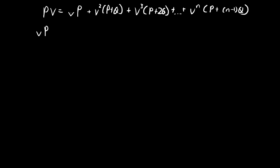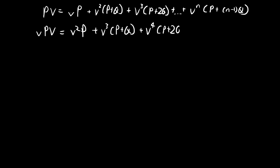The first step is to multiply both sides by V. So we have V²·P plus V³·(P+Q) plus V⁴·(P+2Q), all the way to V^(N+1)·(P+(N-1)Q).